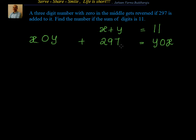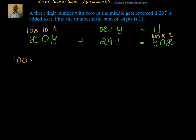Now, x0y plus 297. What is the value of x0y? We know that y is in the units place, zero is in the tens place, and x is in the hundreds place. The value of x0y is equal to 100 times x, plus 0 times 10, plus y times 1, plus 297.